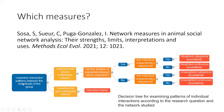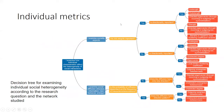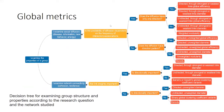For example, if you want to examine interaction patterns between individuals of the group and want to know which individuals interact, you follow one path; but if you want to examine the way individuals interact, you use transitive triplets. If the weight of interaction or association is measured and individual characteristics are categorical, you use weighted categorical assortativity, and so on. We use the same decision tree approach for individual metrics and for global metrics, showing which global metrics to use according to your research question.